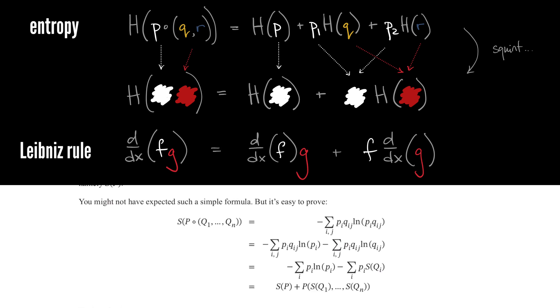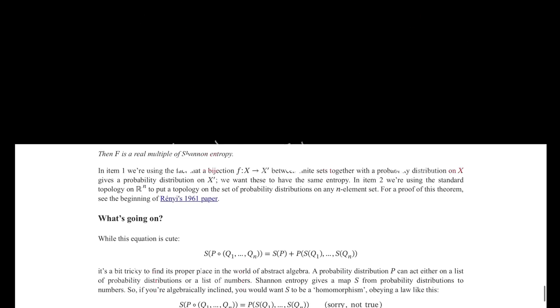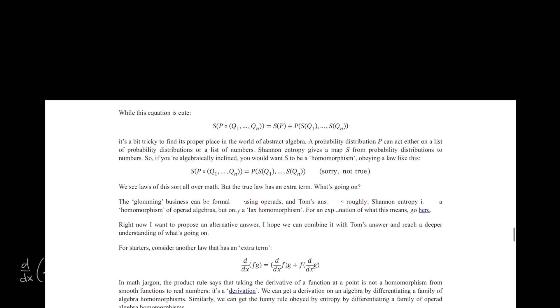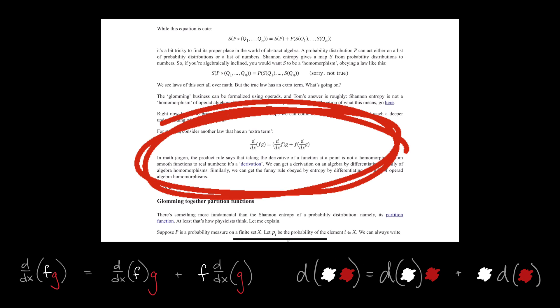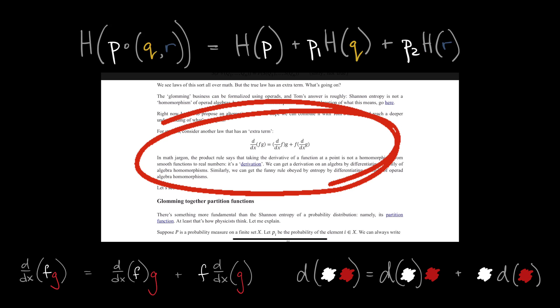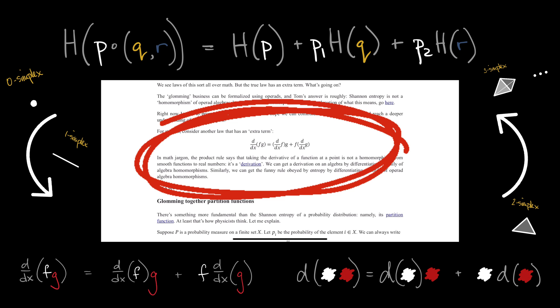But calculus is not the only place where the Leibniz rule appears. In general, a function satisfying a version of that rule is called a derivation, and derivations are a staple in the world of abstract algebra. And the chain rule suggests that all these ideas are related. And indeed, they are.